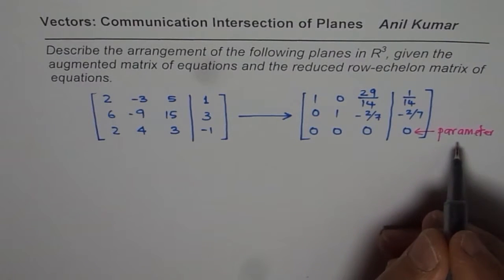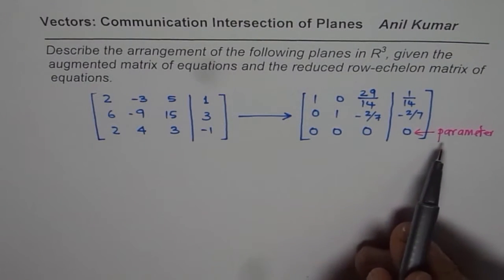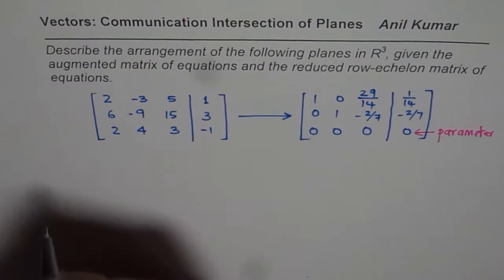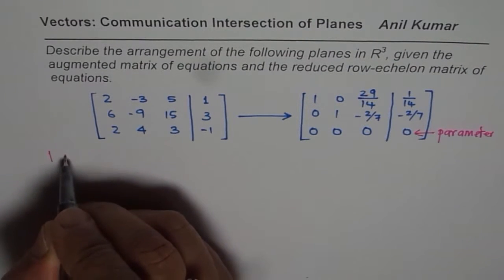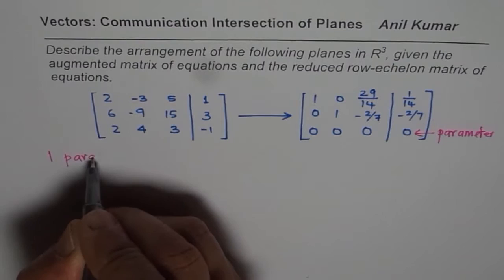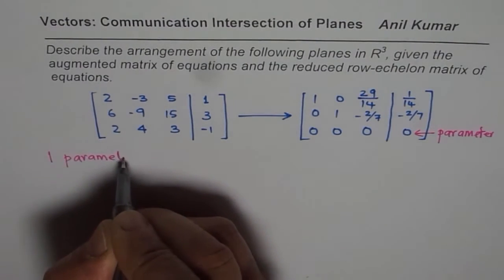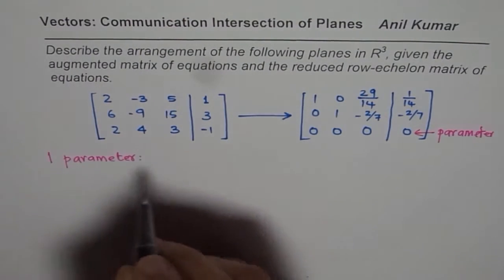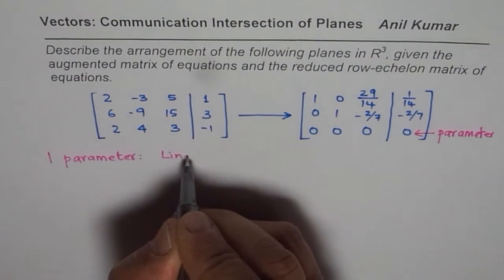One parameter means an object which can be described by one parameter. Which is that object? That is a line. It is a line.